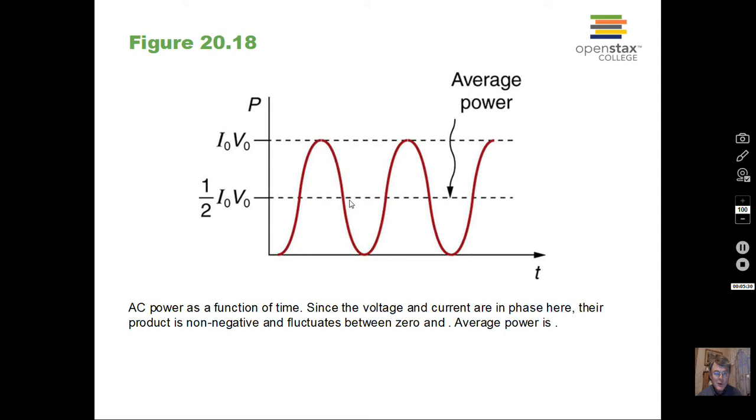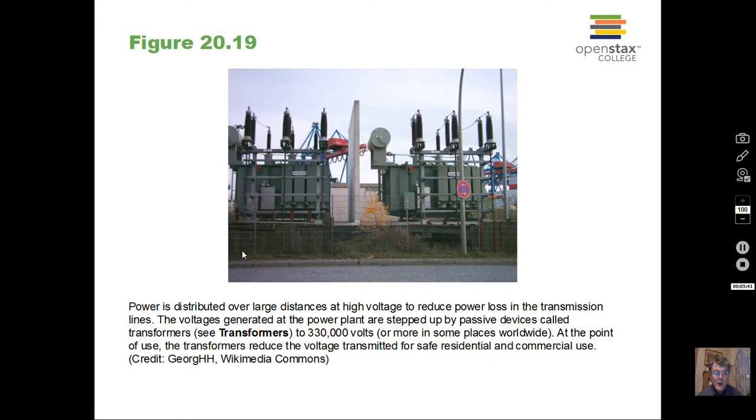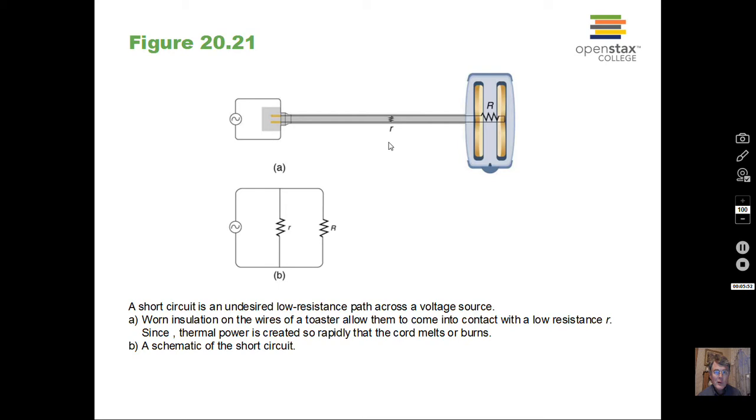Again, for alternating current, the average power - you cannot use the maximum current times maximum voltage because that does not represent the full status of the system over time, but we won't worry about that. And transformers, don't climb in here. These voltages are usually high and there's lethal current. Leave it alone.